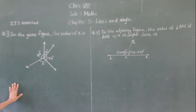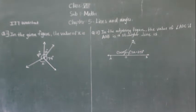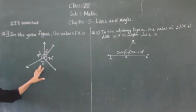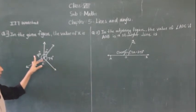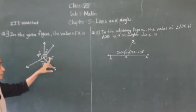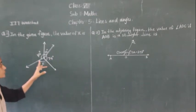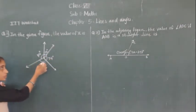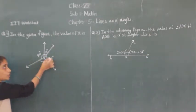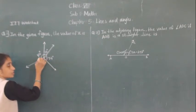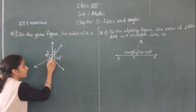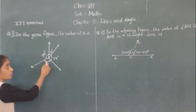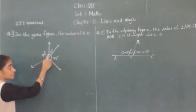Let's solve question number 1. In the given figure, the value of X is. This is X. If you will observe, this is a complete angle — we can say the whole angle. This angle is called a complete angle. We have to find the value of X. If we take this complete angle, we need to find X.